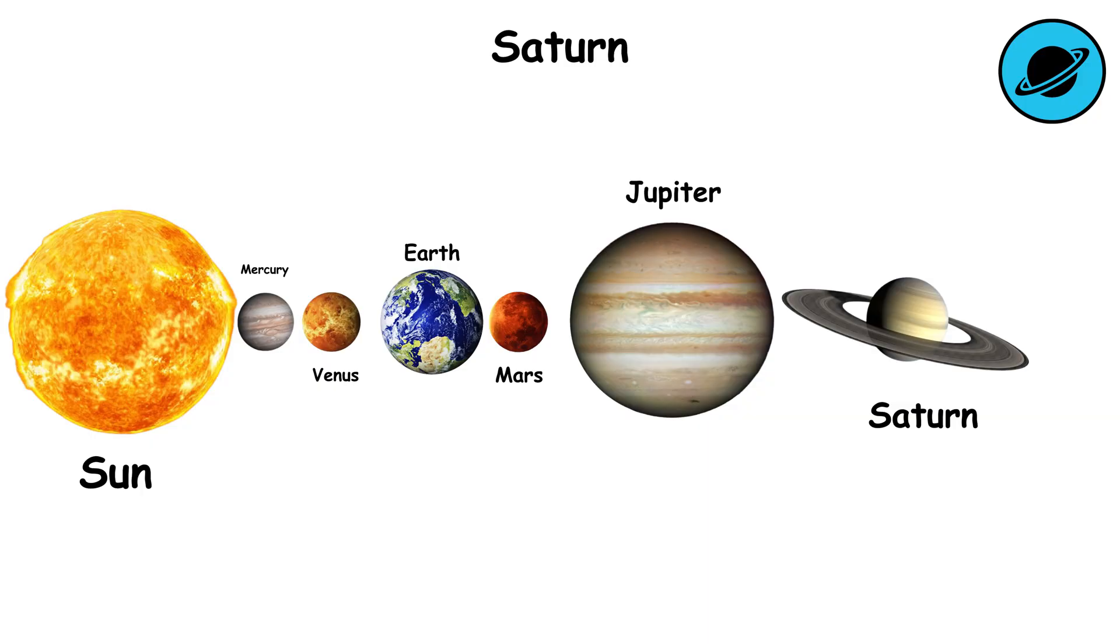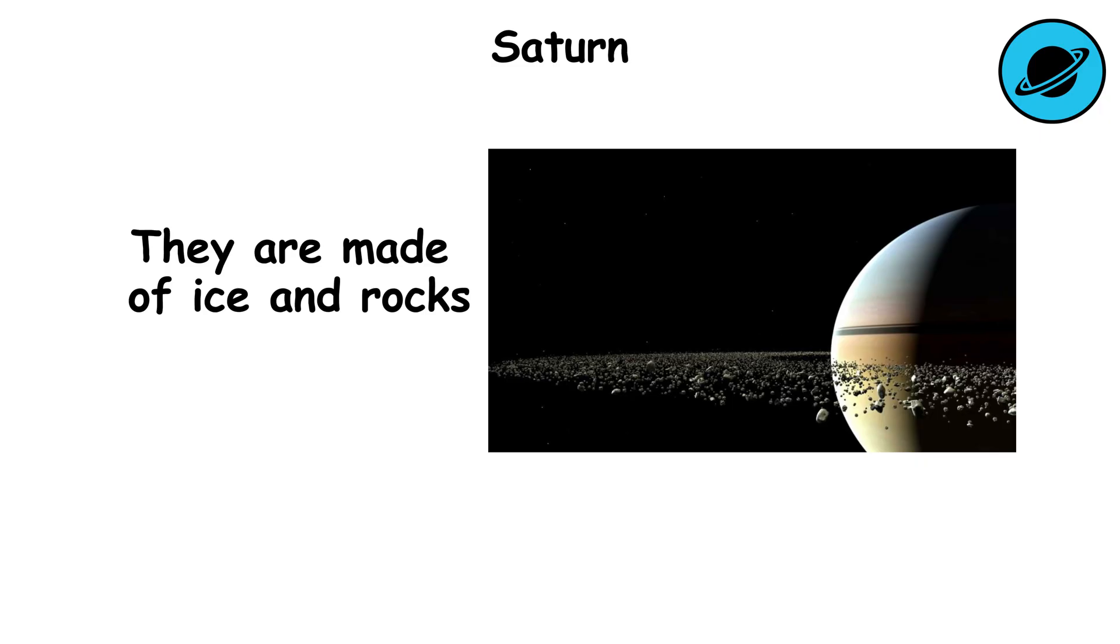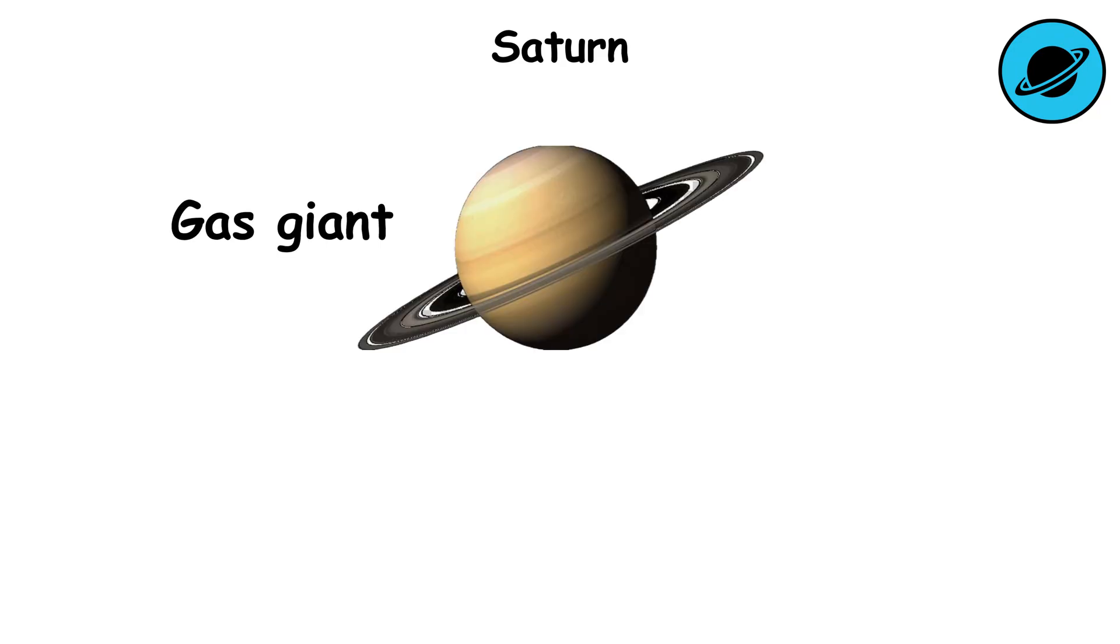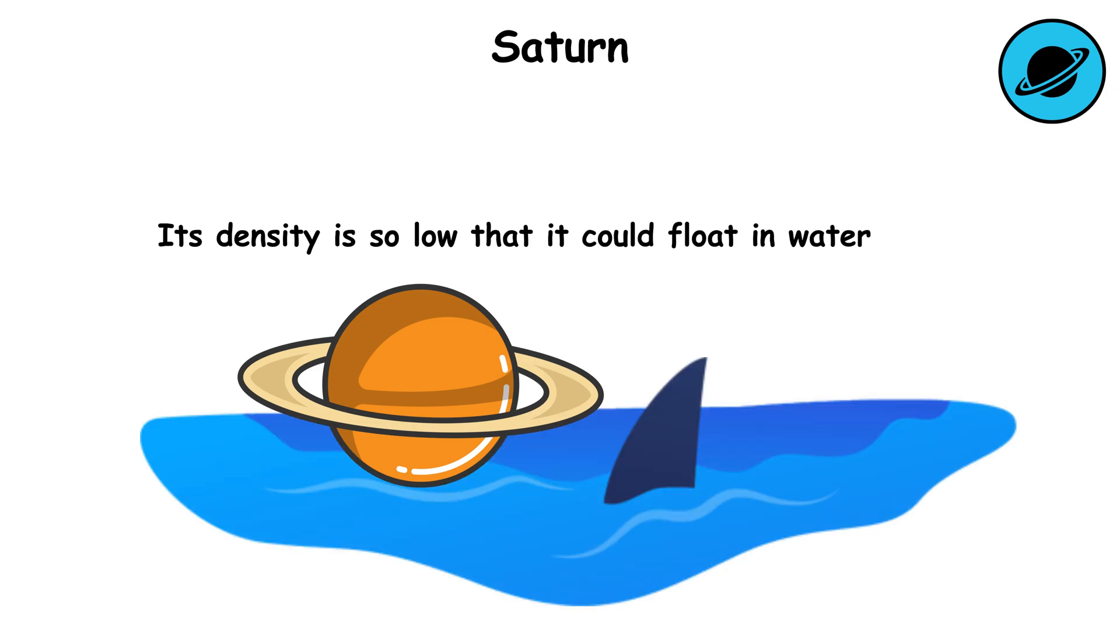Saturn is the sixth planet from the Sun and the most iconic in the solar system because of its stunning rings. They are made of ice and rocks, stretching over hundreds of thousands of kilometers, but only a few meters thick. Saturn is a gas giant, mostly composed of hydrogen and helium. Its density is so low that it could float in water.